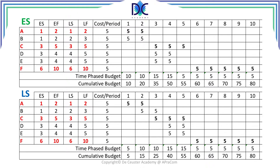Critical path tasks or activities — if we move or extend them, the duration of the project will change. In the case of resource smoothing, the time phase budget is different, as you can see — the first period is already different, and so is the cumulative budget. Nevertheless, in period 10 at the end of the project, the cost is the same in both cases.